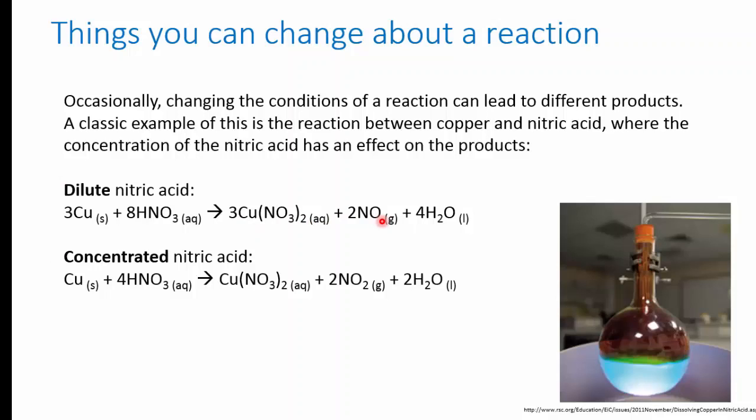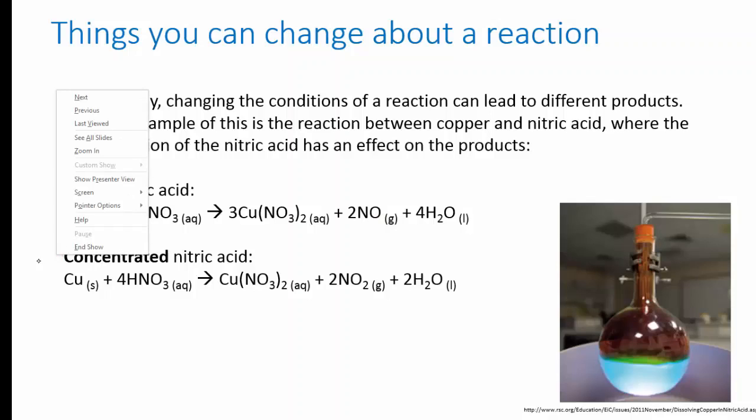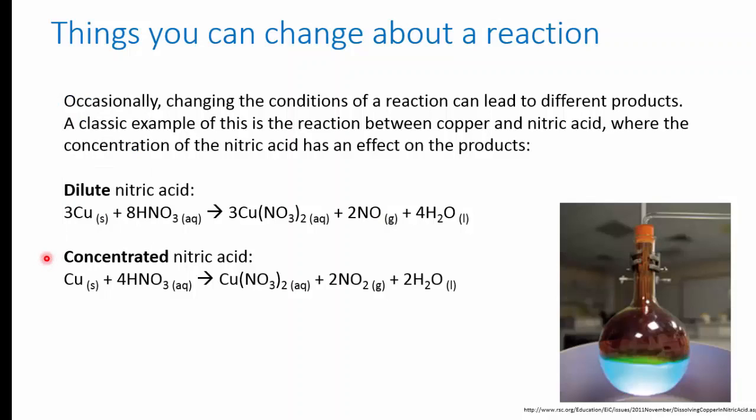But if you add the copper to concentrated nitric acid, 15 molar say, then the stoichiometry is different and we get nitrogen dioxide gas as a product. This is a brown toxic gas, and this is what you can see in the picture here from the Royal Society of Chemistry, the brown nitrogen dioxide gas coming off from the solution.